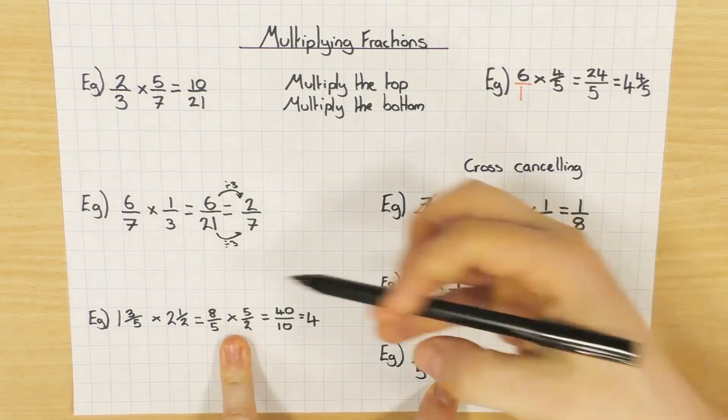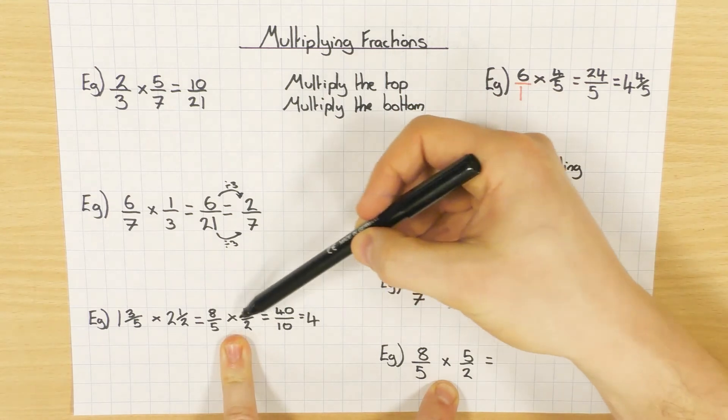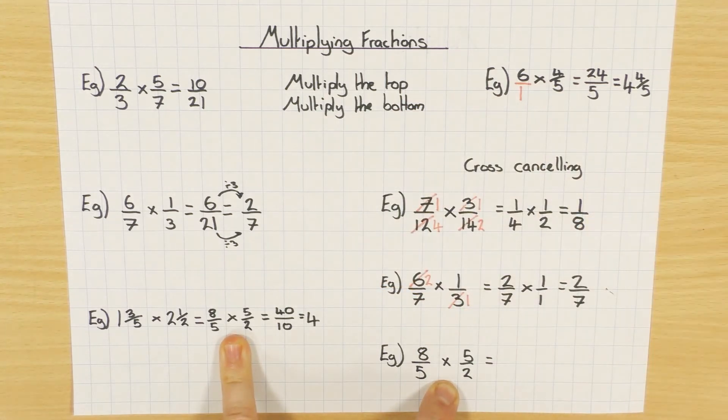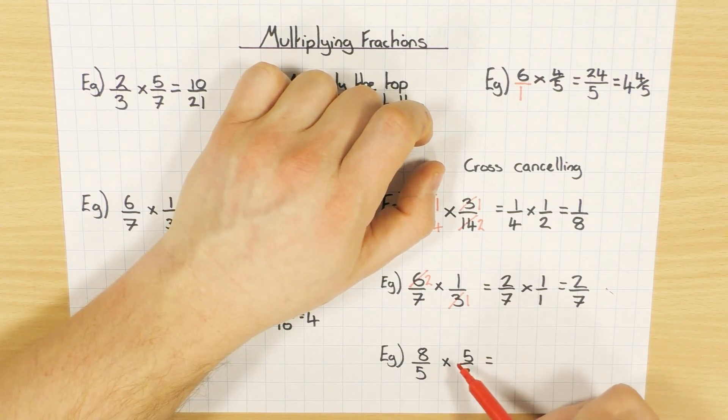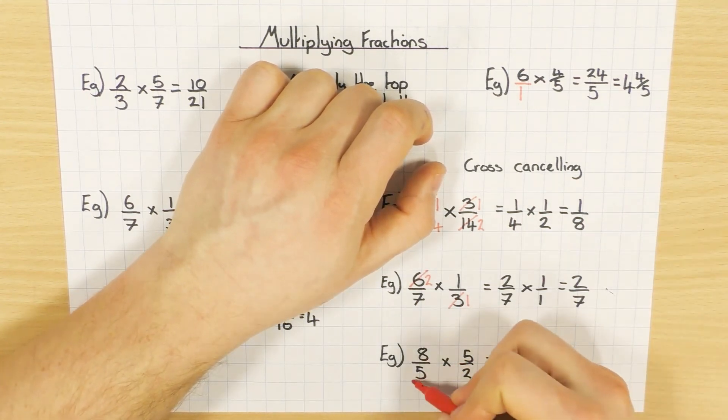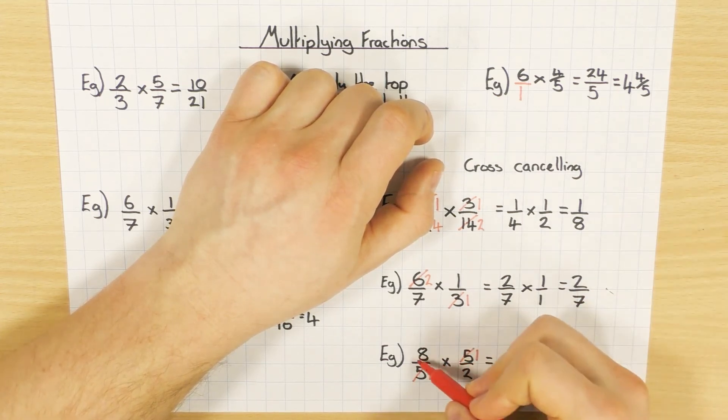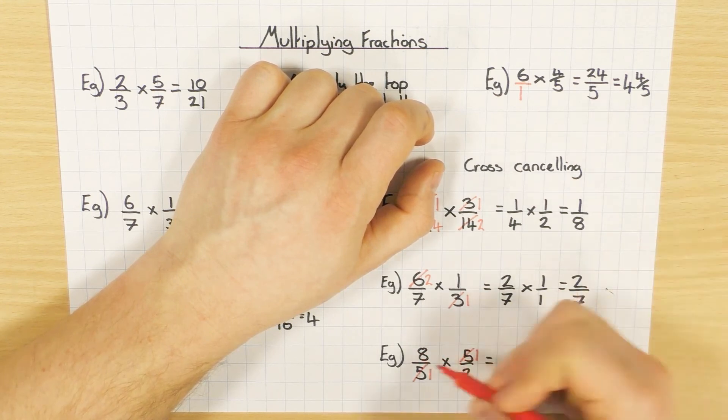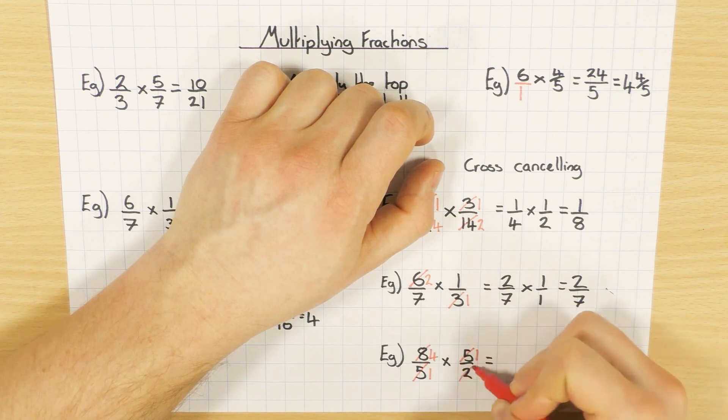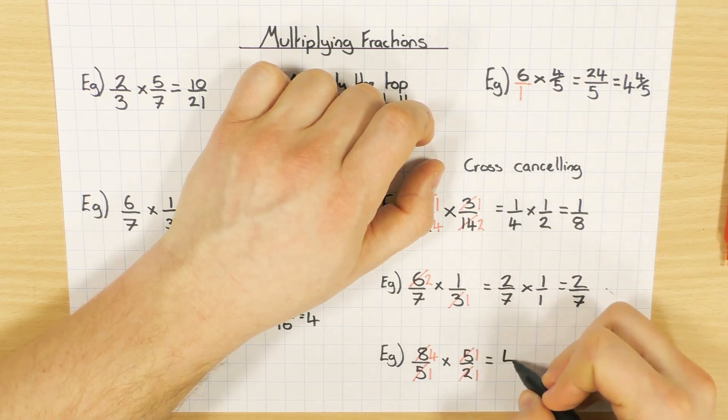Exactly the same thing here. I've got 8 over 5, 5 over 2. So this is just top-heavy, taken from this example here. I'm going to cross-cancel again. Looking at the diagonals, 5 and 5. Obviously, 5 goes into both of them. So I divide by 5 to get 1, and divide by 5 to get 1. And 8 and 2. What number goes into 8 and 2? Well, 2. So 8 divided by 2 is 4, 2 divided by 2 is 1. So again, I'm changing my question to make it a bit simpler.